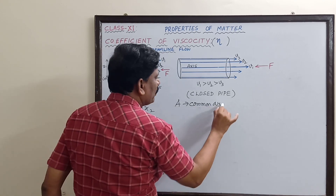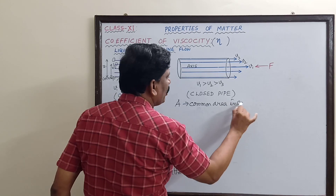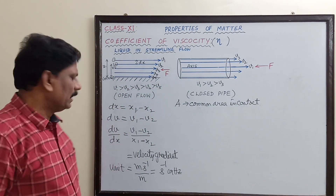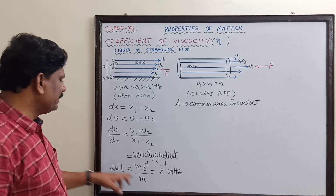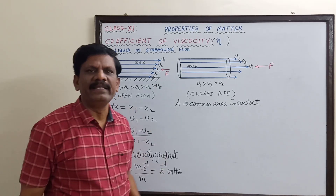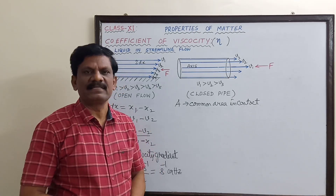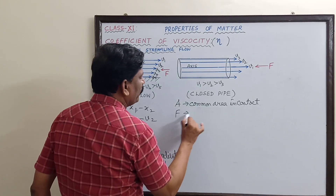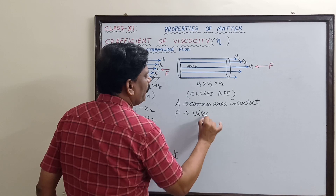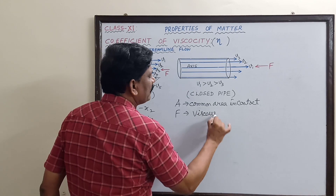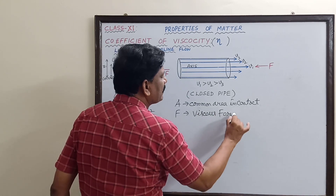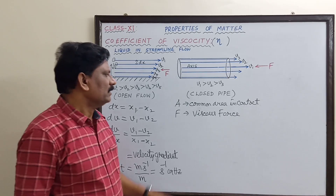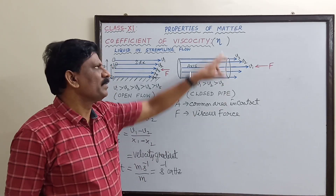That common area of contact is denoted by the symbol A. So A is the common area in contact between two layers of the liquid, and dv/dx is the velocity gradient between any two layers. The force F is the opposing viscous force.